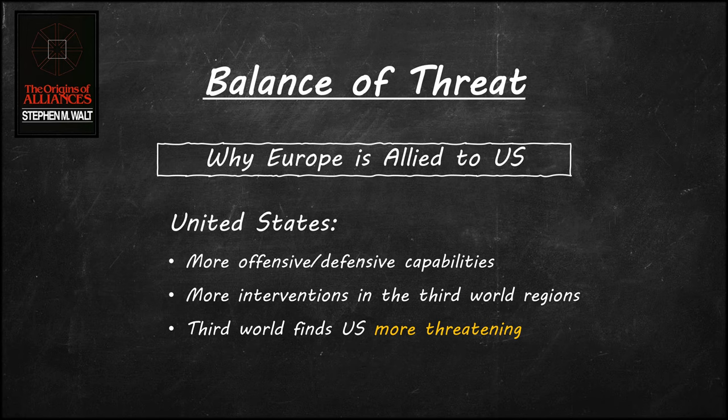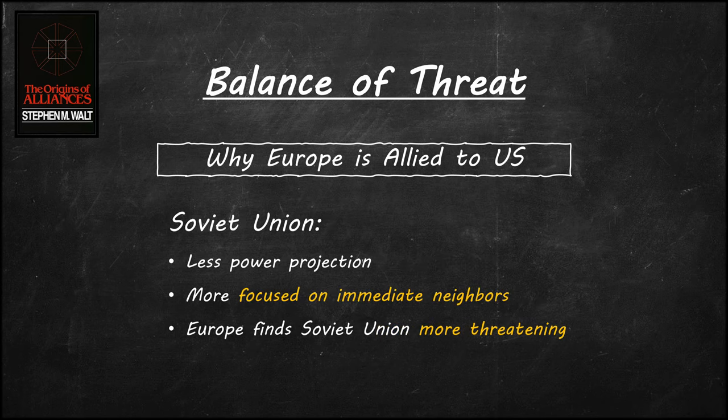The United States has more offensive and defensive military capabilities than the Soviet Union. But Walt finds an interesting implication from this disparity. Because the United States has more power projection capabilities, it focused more on intervening in what is commonly called Third World Countries, often on moralistic ideals to its own detriment. This apparently led many Third World Countries to develop a threatening perception of the United States. Conversely, the Soviet Union, because it has less power projection capabilities, focused more on threatening its more immediate European neighbors to secure itself while providing more political support to Third World Countries.